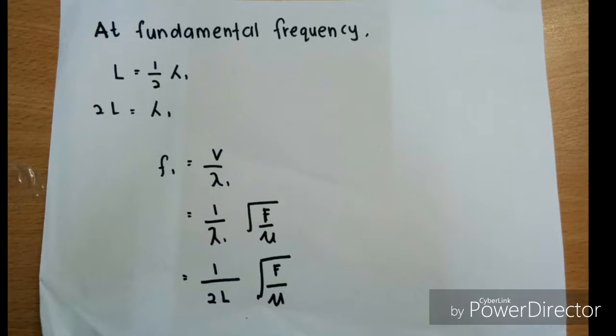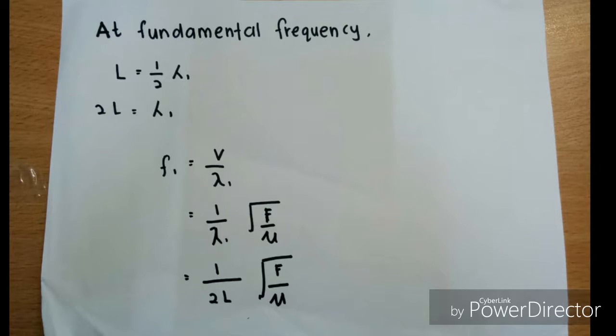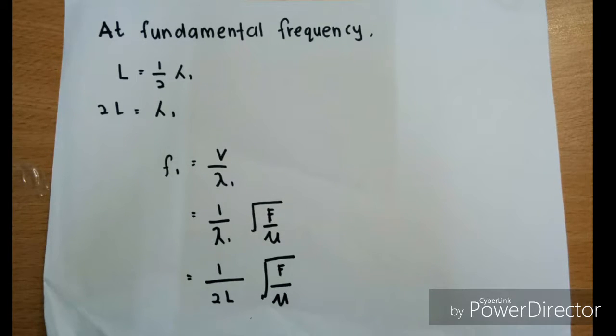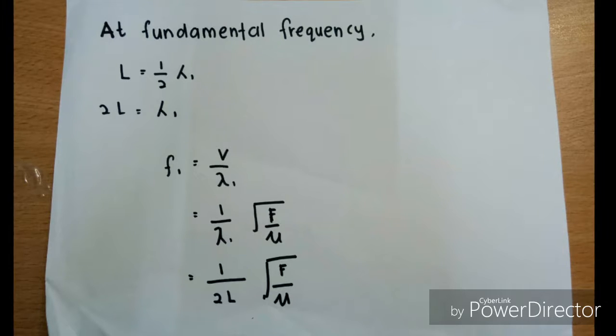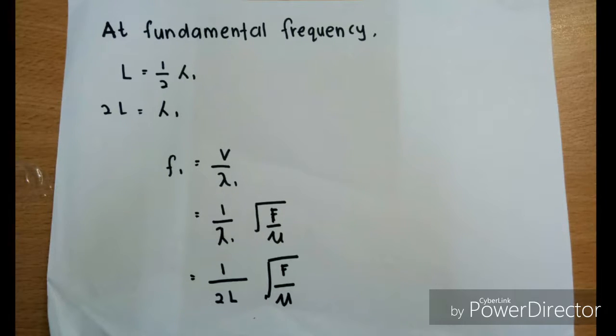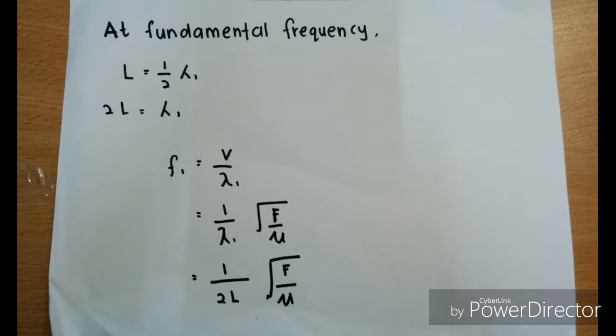L is equal to half lambda because it has two nodes. So then, 2L is equal to lambda. F is equal to velocity over lambda.